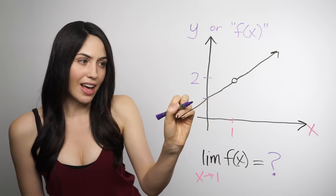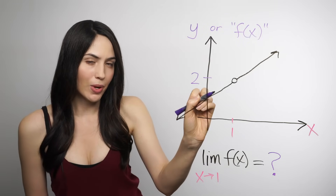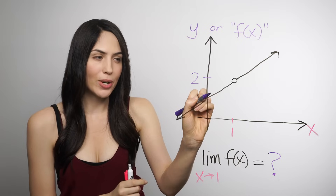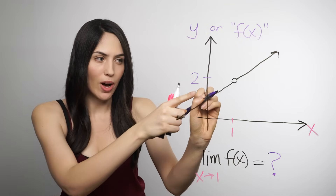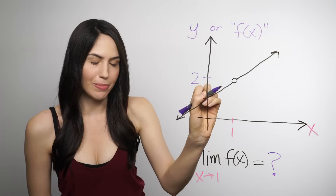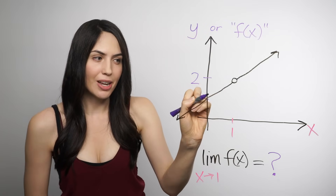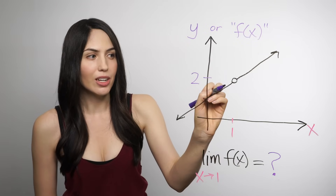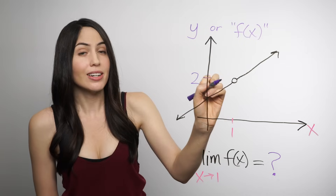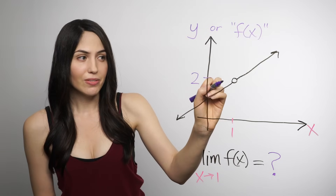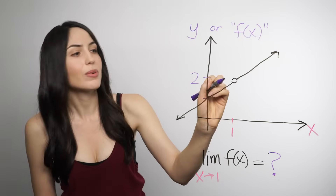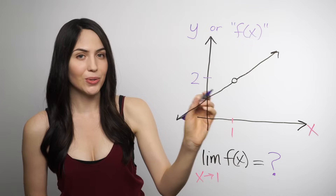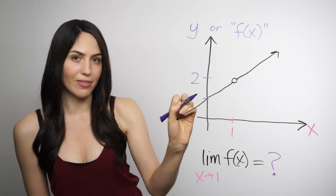So if we trace from the left heading toward x equals 1, what we really care about for the limit is y values — the vertical values. We need to check what y values we're hitting as we approach from the left. It will be numbers like 1.5, 1.6, 1.7, getting really close to 2, 1.9. And if we get incredibly close and zoom in, we'll see numbers like 1.99, 1.999999 — really close to 2, practically 2. So the limit from the left is 2.